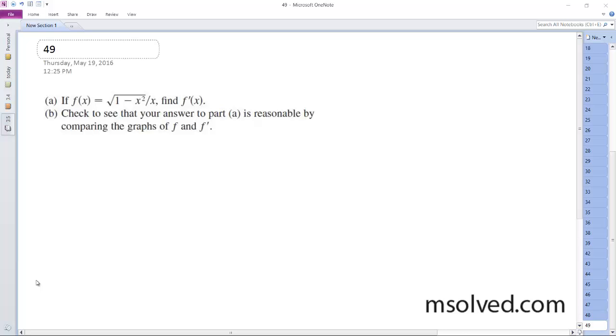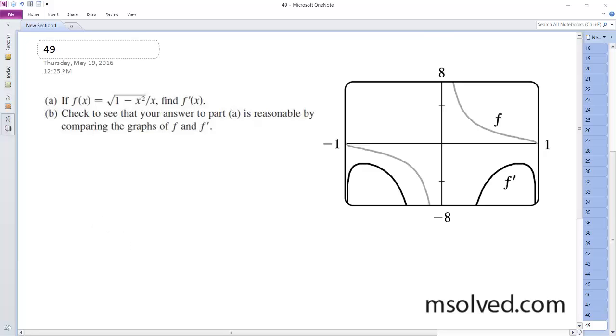Alright, so we want to find the tangent line and then graph it in a reasonable graph of f and f prime. So what I did is I just pasted in part b because it's very hard to graph something like that by hand on the fly.